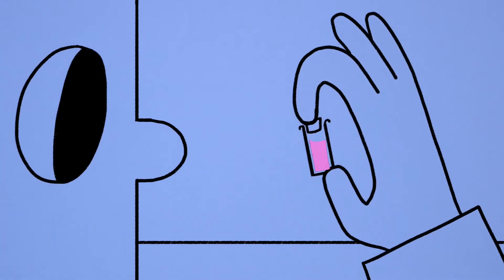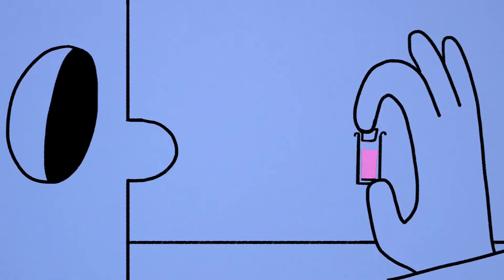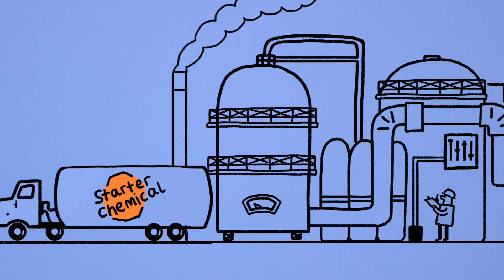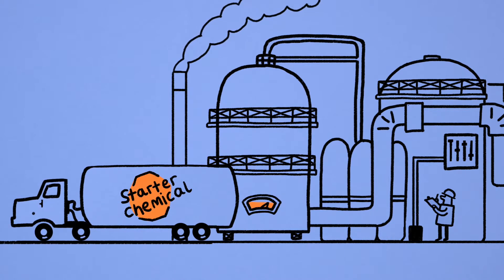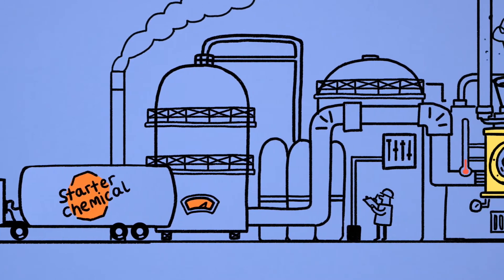That's why chemists aim to replicate natural chemicals in their laboratories. They take a starter chemical that is abundant in supply, then work out how to turn it into the chemical product they need.